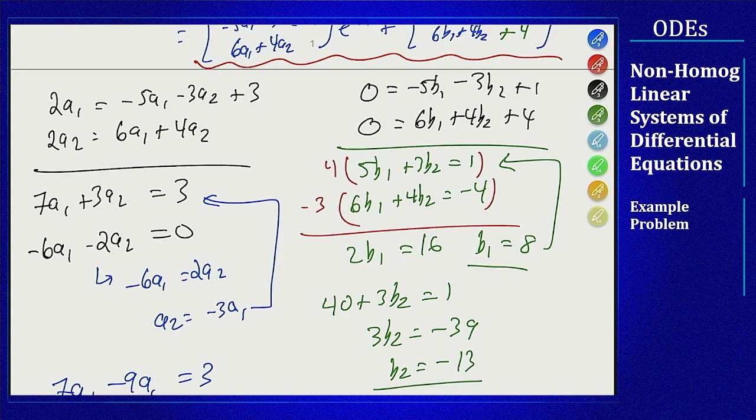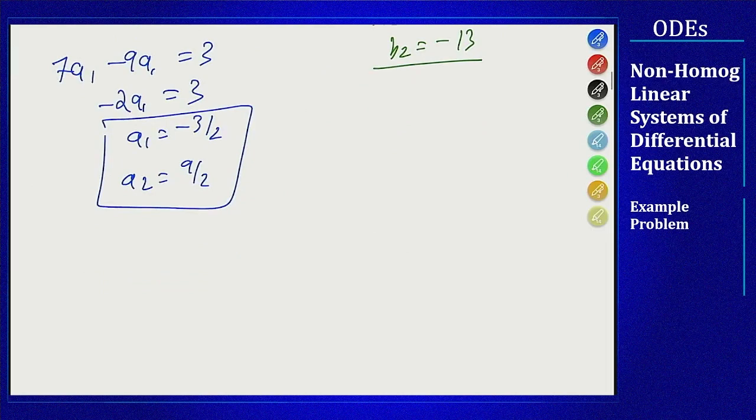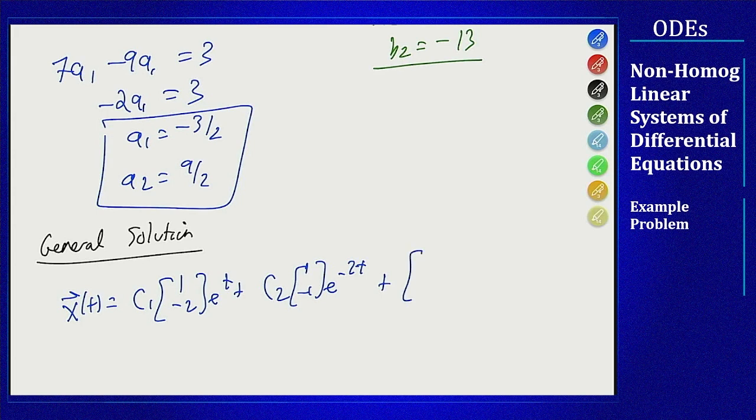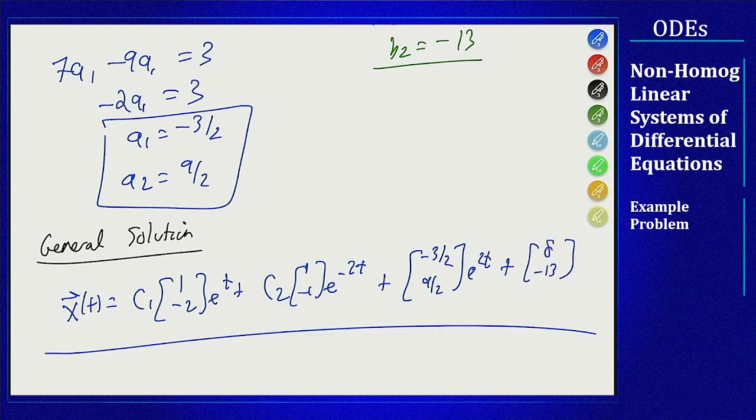What that means then is by this method our general solution will be the homogeneous part and then our non-homogeneous part which is minus 3 halves and 9 halves e to the 2t plus 8 minus 13, which is the same that we got by diagonalization.